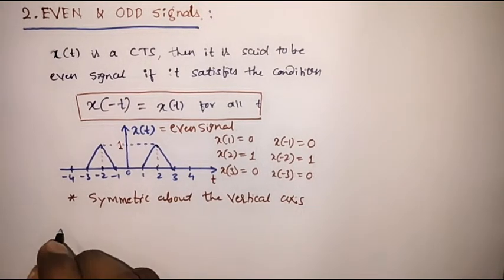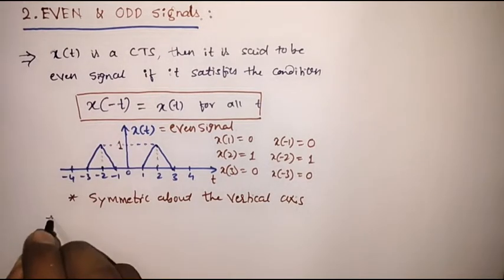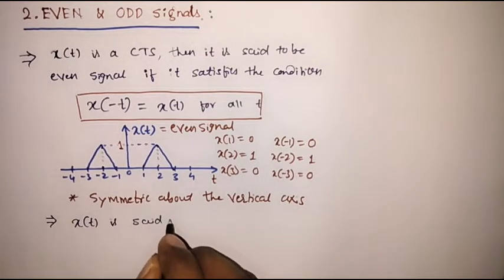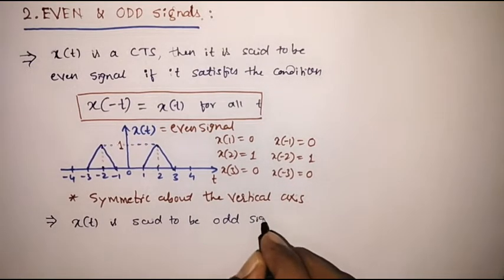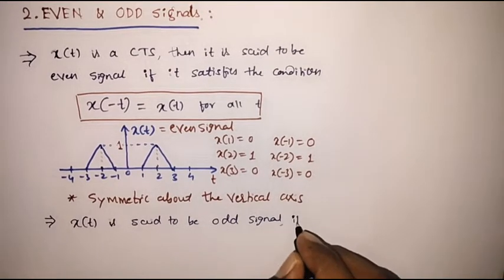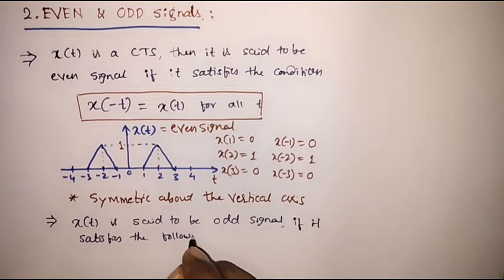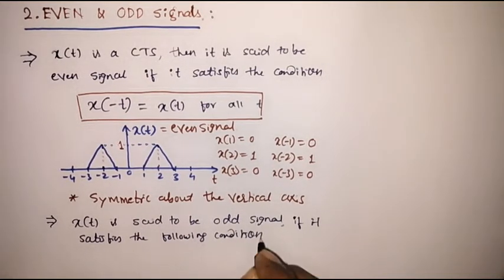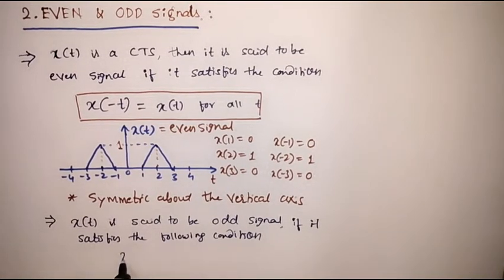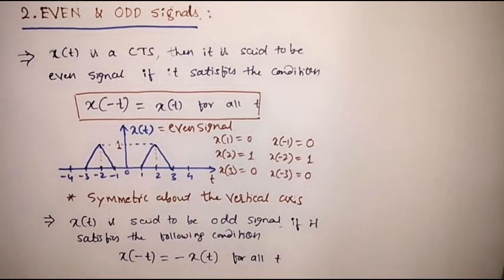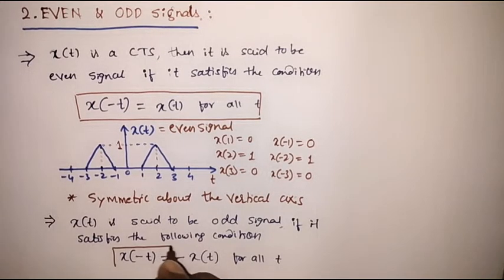A continuous time signal x of t is said to be an odd signal if it satisfies the following condition, that is x of minus t is equal to minus x of t for all t. This is the condition for the signal to be odd.